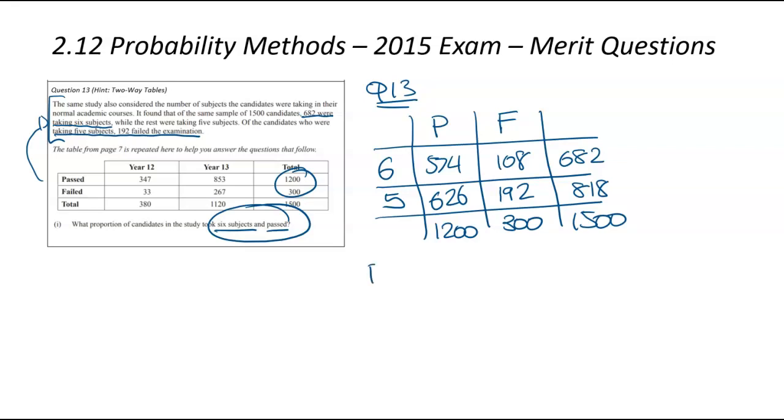So we've now got a two-way table exploring the variables that we actually care about. We're now going to get into the probability part of it. So we're trying to find the probability of six subjects and passing. For this type of question, two-way tables, we're always going to look at F over T. There is 1,500 students in total. Of those, how many took six subjects and passed? That would be 574. We then put that into our calculator to find out a decimal, and I'm getting 0.3827, and that there had a 4DP rounding.